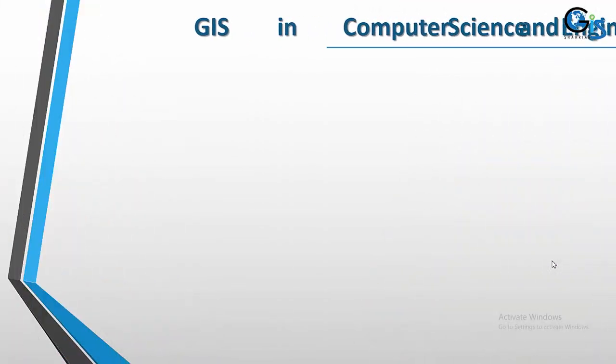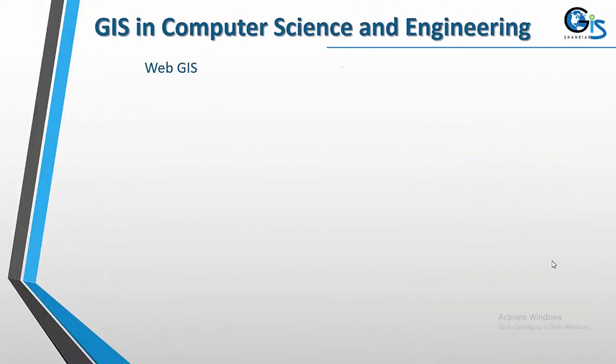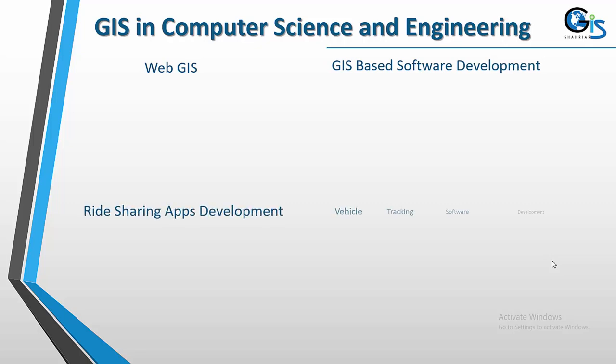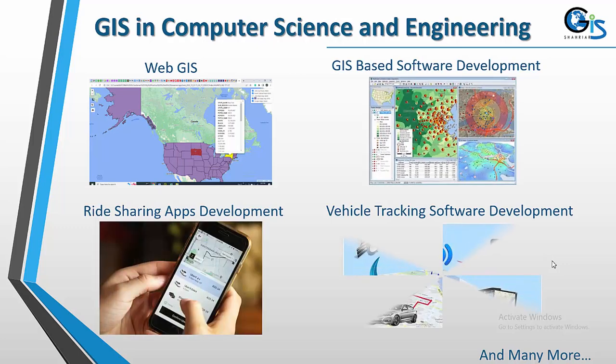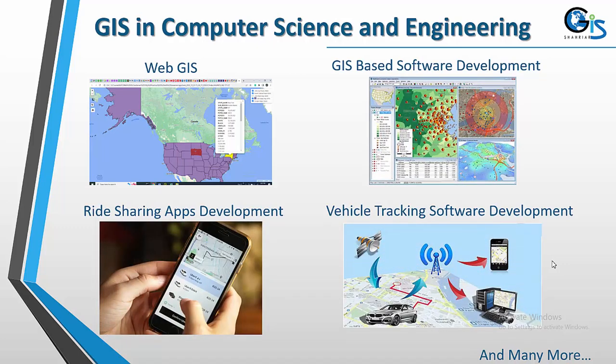Let's see a different sector using GIS in a more dynamic way — web GIS. Imagine a government organization or any land-based organization that wants to publish land-based information on a web portal to provide information publicly, so any user can visit their website and see their land information — land use type and much more — in a web map.